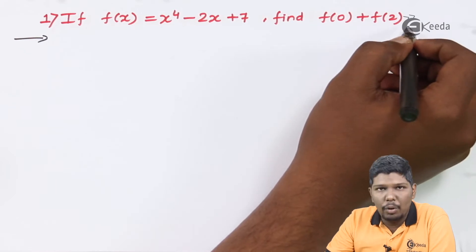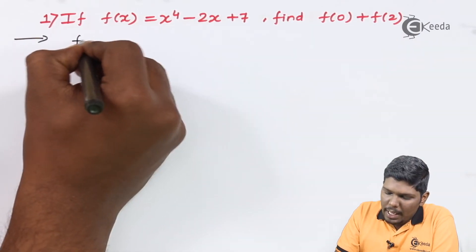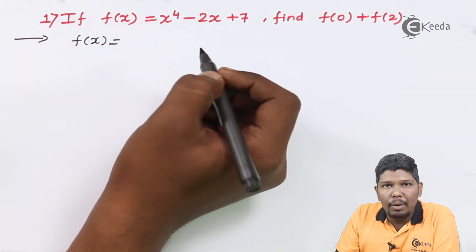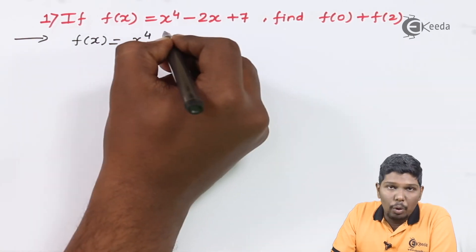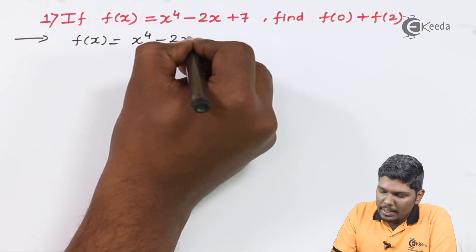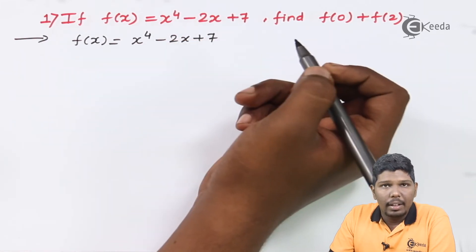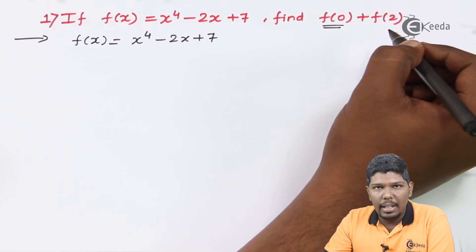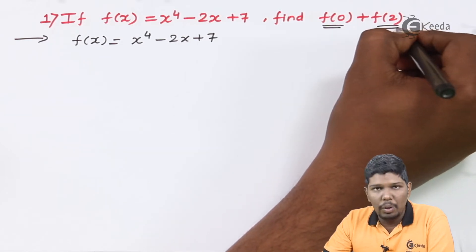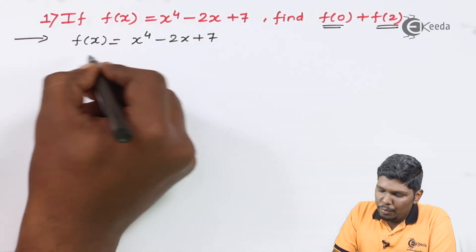So to start with this problem we'll write the given function f(x) = x^4 - 2x + 7. First we'll find the value of f(0), and then we'll find the value of f(2), and then we can add both of these terms.